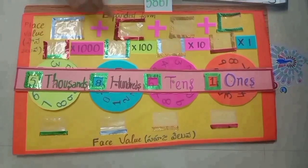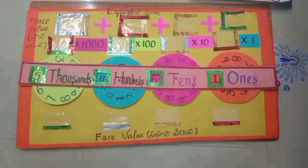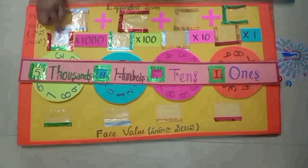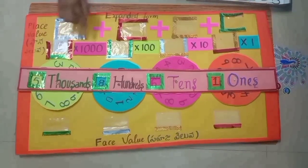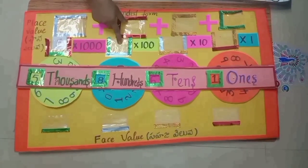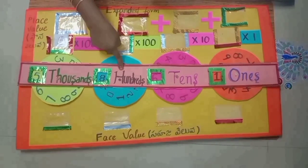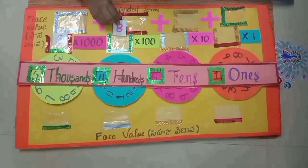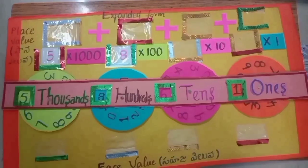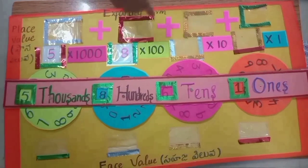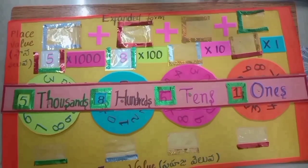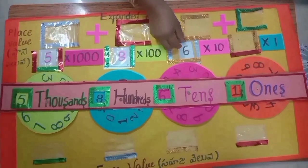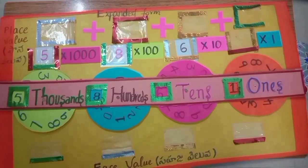5 is in the 1000s place, so we take 5 into 1000, which equals 5000. 8 is in the 100s place — 8 into 100. 6 is in the 10s place, so we take 6 — 6 times 10. Here, 1 is in the 1s place.